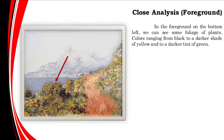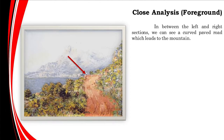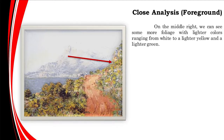In the foreground, we can see some foliage of plants, with colors ranging from black to a darker shade of yellow and to a darker tint of green. In between the left and right sections, we can see a curved paved road which leads to the mountain. On the middle right, we can see some more foliage with lighter colors ranging from white to a lighter yellow and a lighter green.